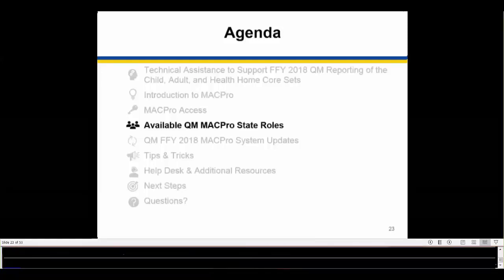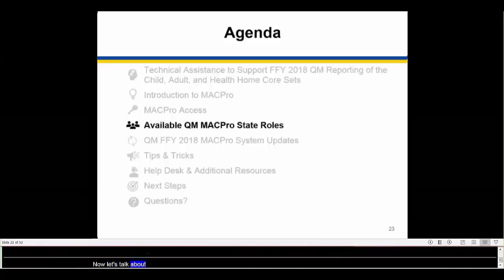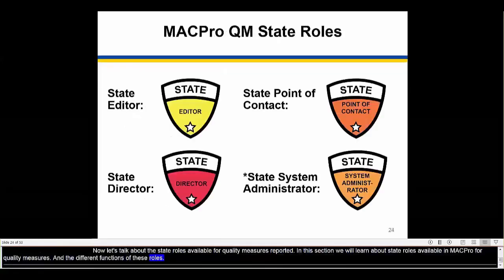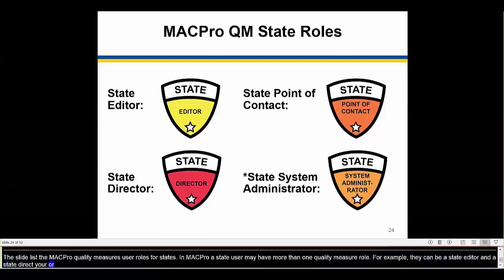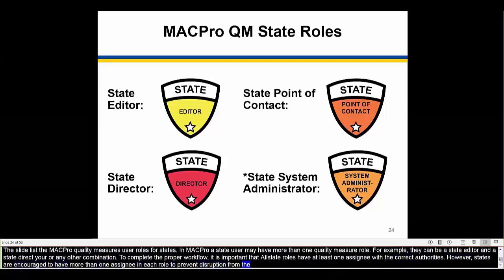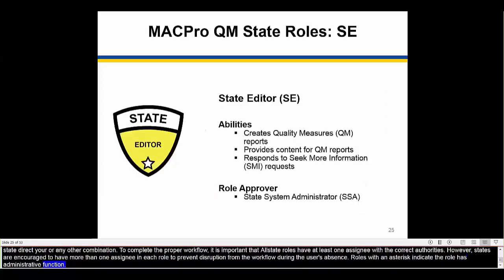Now let's talk about the state roles available for quality measures reporting. In this section, we'll learn about the state roles available in MACPro for quality measures and the different functions of these roles. In MACPro, a state user may have more than one quality measure role — for example, they could be a state editor and a state director or any other combination. To complete the proper workflow, it's important that all state roles have at least one assignee with the correct authorities. States are encouraged to have more than one assignee in each role to prevent disruptions during a user's absence. Roles with an asterisk indicate that the role has administrative functions.